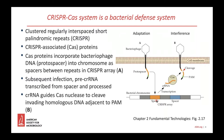The bacterial CRISPR-Cas system has functional similarities to the mammalian immune system: it provides protection against foreign invaders, it has memory as the CRISPR array contains a record of past infections, and it is adaptable in that new spacers can be acquired and added to the array. In addition, immunity is heritable, as the array is passed on to offspring during cell division.